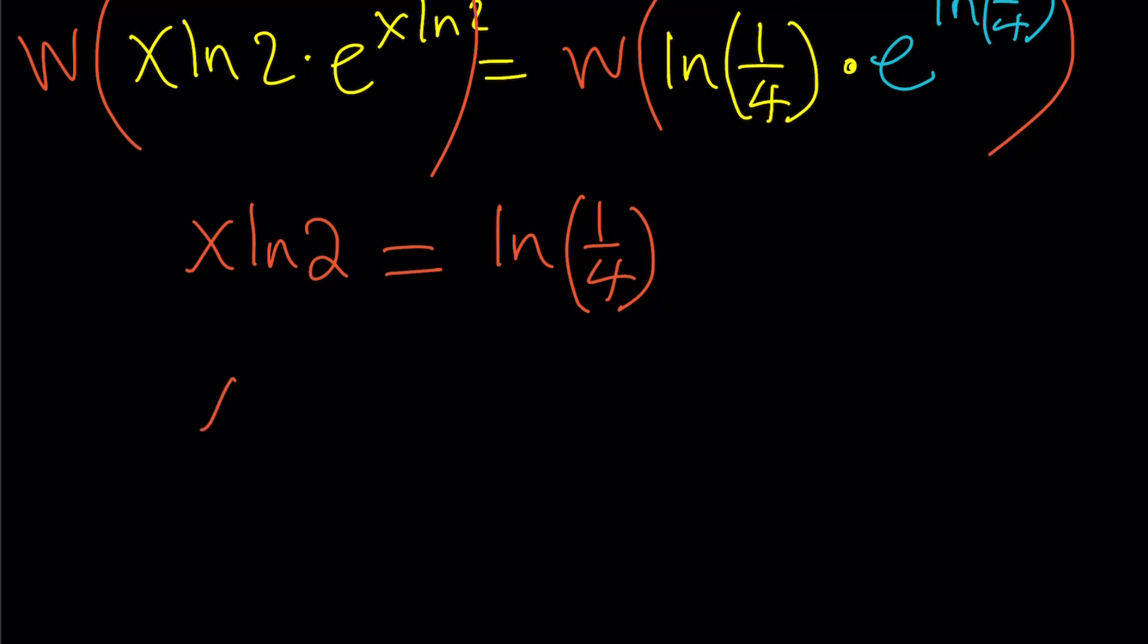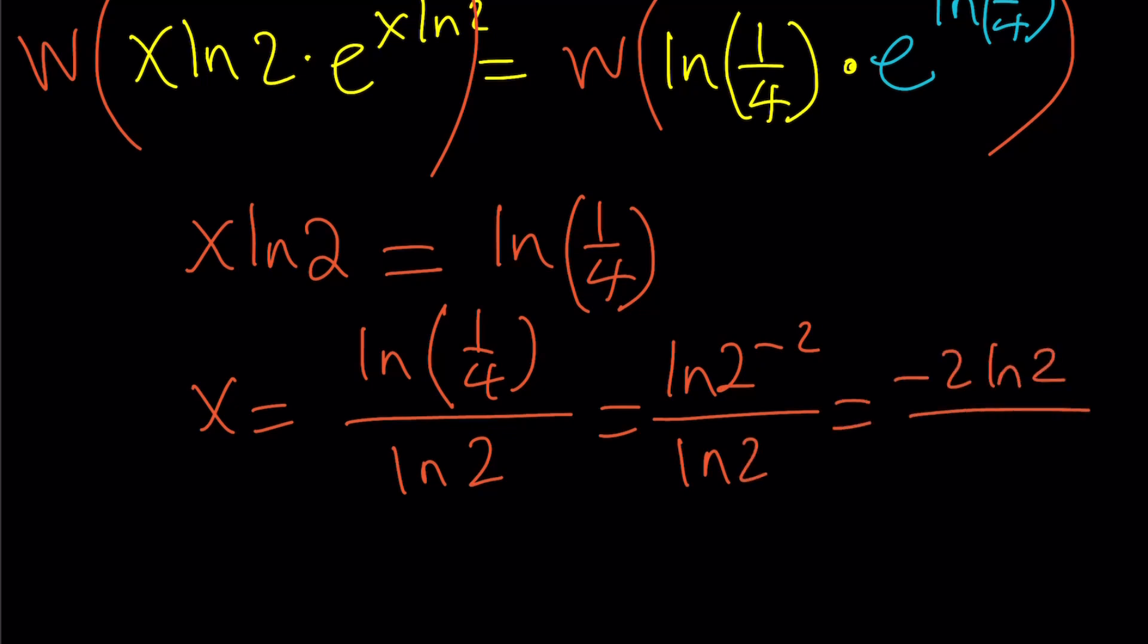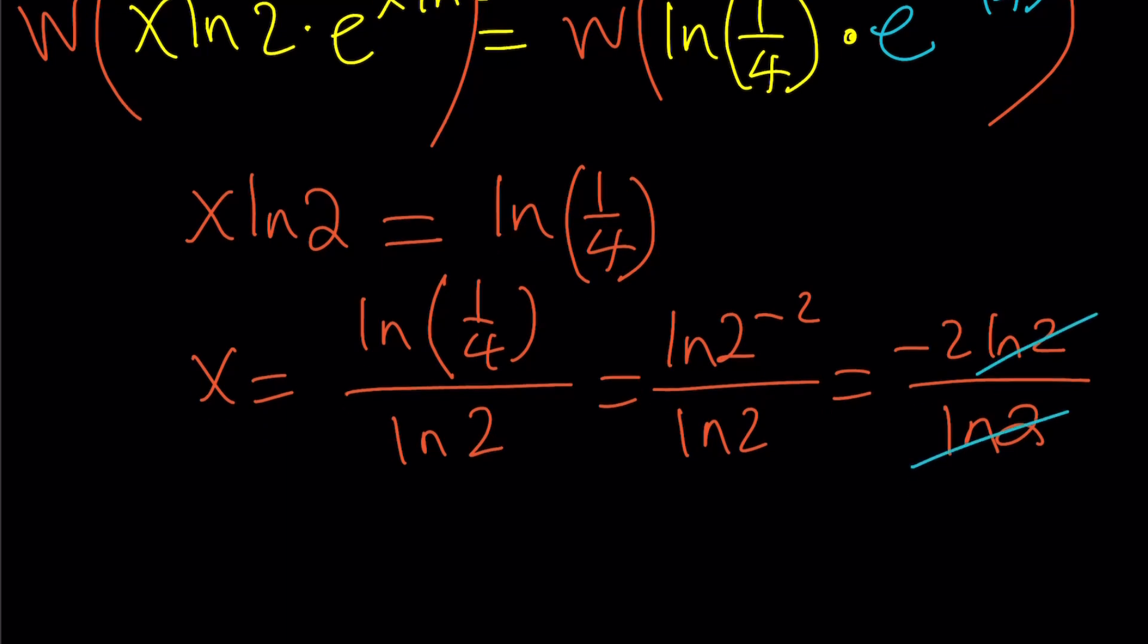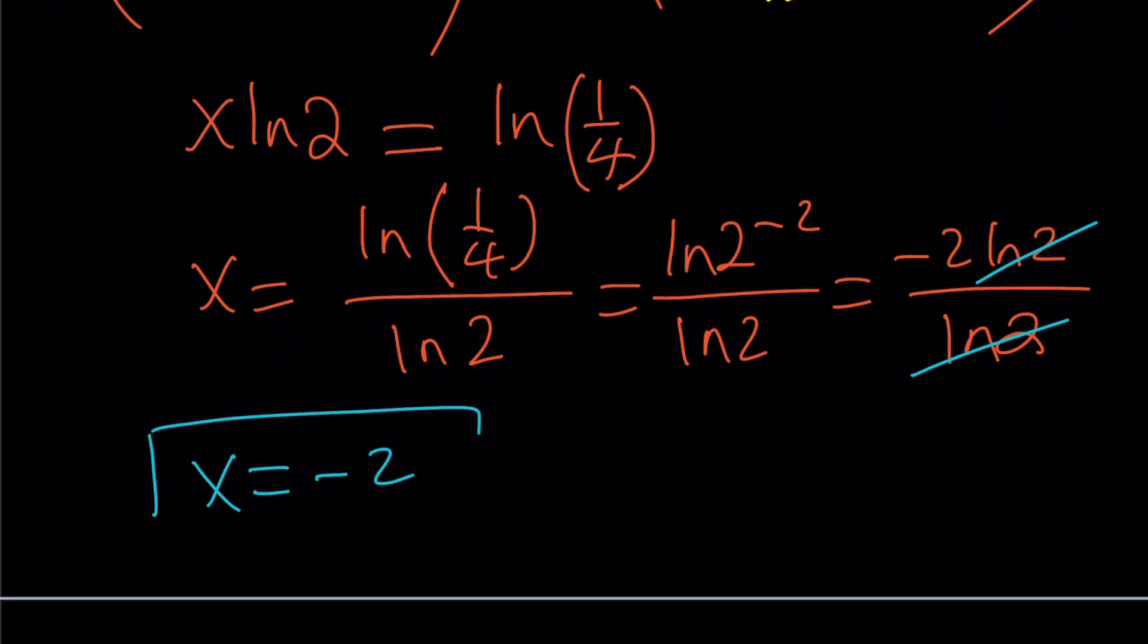So here's what we're going to do. Divide both sides by ln 2 again. And of course, this is a different solution. ln 1 fourth is ln 2 to the power negative 2. And yes, this will give me another solution, which is an integer, again, which makes it kind of easier to find. So we didn't have to use a calculator. Sometimes you get nice values, and x equals negative 2 will be another solution.